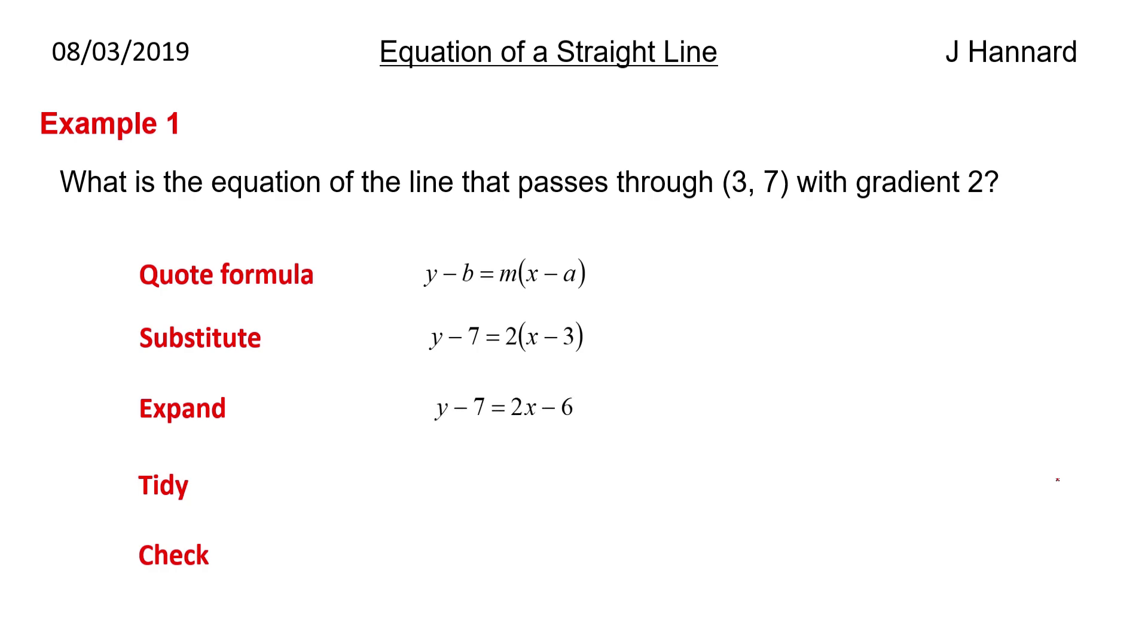We then expand the bracket. On the other side, being very careful of course, y minus 7 equals 2x minus 6. And then we take the minus 7 over the other side and hey presto, we have our equation of a straight line: y equals 2x plus 1. Now if you want to check that, you can put x to be 3 and y to be 7 and you should get 7 equals 7 basically. So, 7 on the left hand side there is 2 times 3 plus 1, so 7 is 7. Looks pretty good to me.